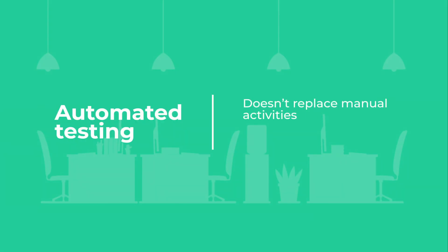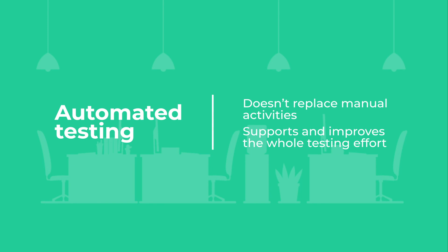The goal of automated testing is not to replace manual activities. It is meant to support and improve the whole testing effort. When done right, automation allows for quicker feedback to development, detection, and resolution of issues. Automated testing should run in parallel with manual testing as a combined approach. Only successfully managing both will help you to end up with a good software product.